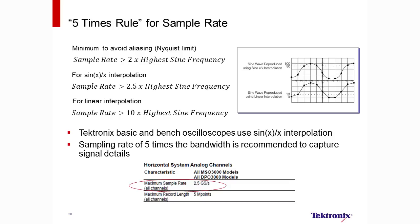Tektronix recommends another rule of five here. We suggest that your sample rate should be five times faster than the highest frequency component of interest. This will give you good detail and is more than enough to avoid aliasing. Most of our scopes maintain this relationship. As an example, I've clipped a datasheet for a 500 megahertz scope. The fastest sampling rate of 2.5 gigasamples per second allows you to capture five samples for each cycle of a 500 megahertz sine wave.